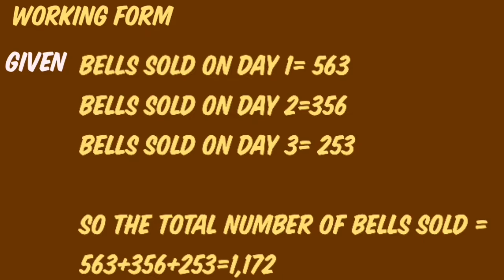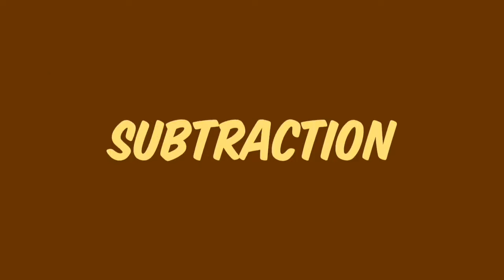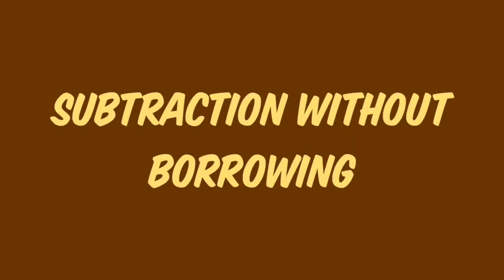563 plus 356 plus 253 is equal to 1172 bells. So he sold 1172 bells in total. Next topic is subtraction — starting with subtraction without borrowing.